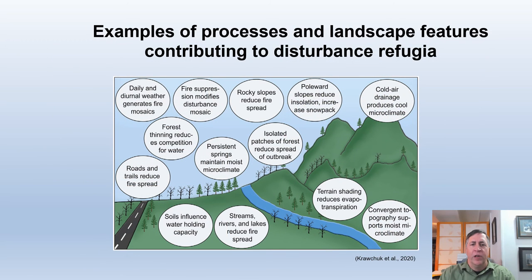Disturbance refugia are areas more likely to persist through disturbances like fire, drought, storms, or insect outbreaks, or more likely to recover from them. Since climate change is likely to increase the frequency and magnitude of many types of disturbances, identifying disturbance refugia is essential to maintain local species and ecosystems. This figure shows examples of processes and landscape features that help form disturbance refugia. These can be natural, like terrain shading, rivers and lakes, or moist soils, or human constructs like roads and trails. Roads can have many negative ecological effects, but can serve as fire breaks.